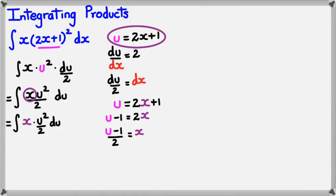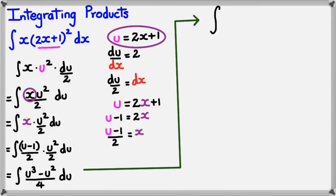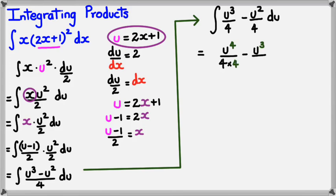So the equation is x times u squared divided by 2 du. I'm going to replace x with (u minus 1) divided by 2. So this becomes (u minus 1)/2 multiplied by u²/2, times du. Simplifying this, I get (u³ minus u²) divided by 4 du. Separating into two fractions, that's u³/4 minus u²/4 du. Now it's just basic integration, so integrating gives u⁴ divided by (4 times 4) minus u³ divided by (4 times 3).